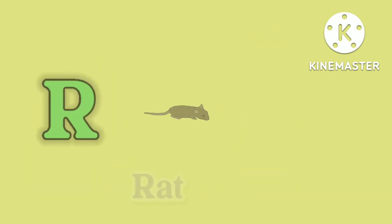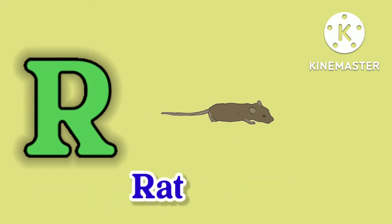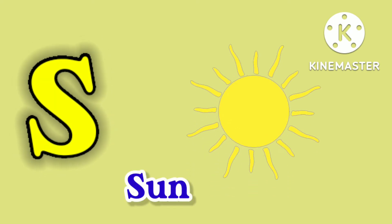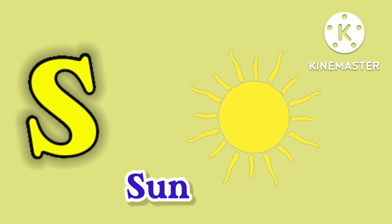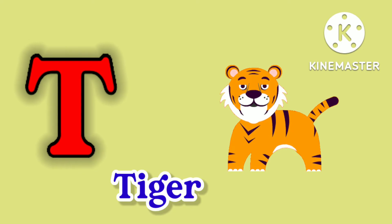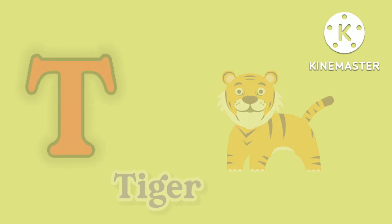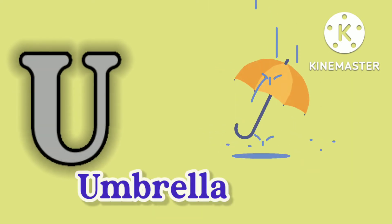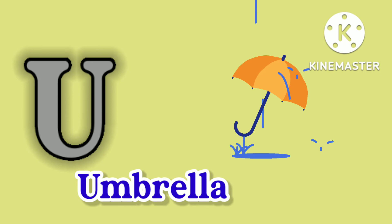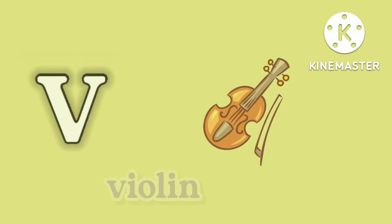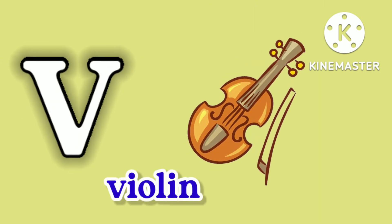R for rat, S for sun, T for tiger, U for umbrella, V for violin.